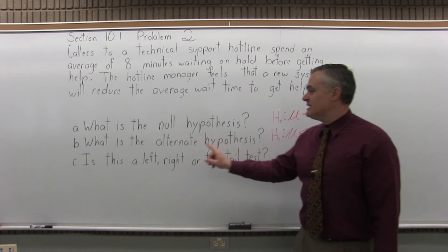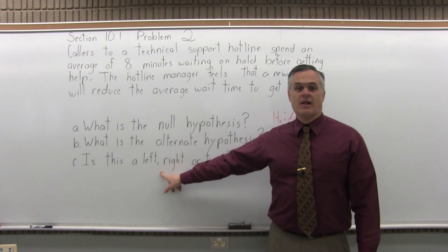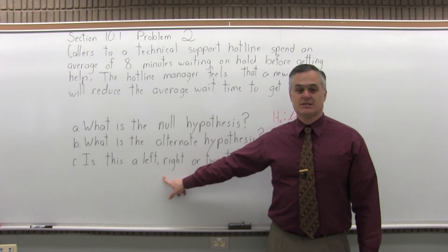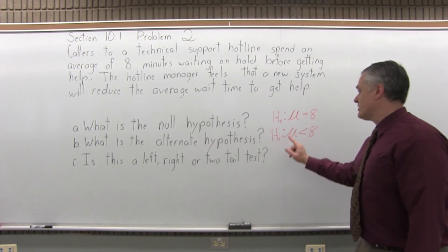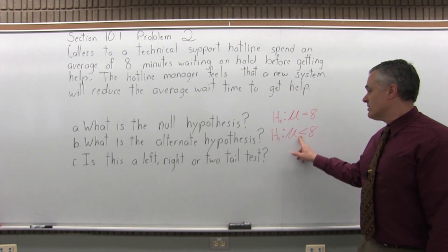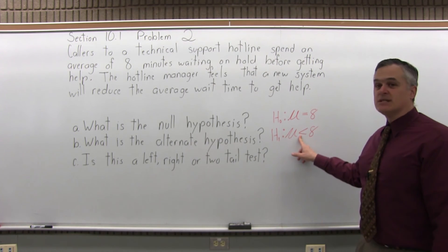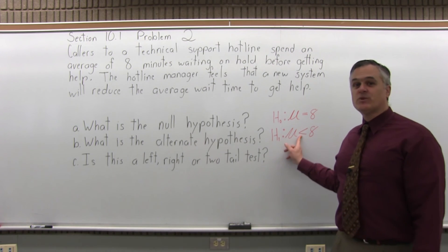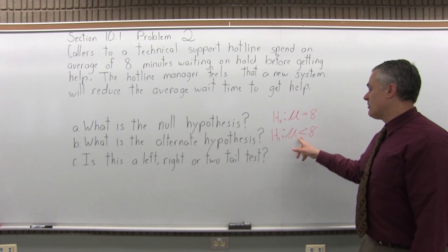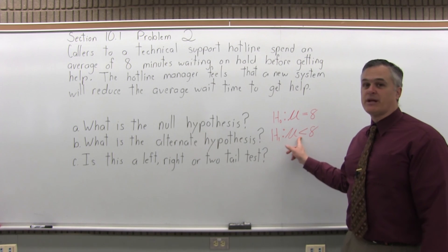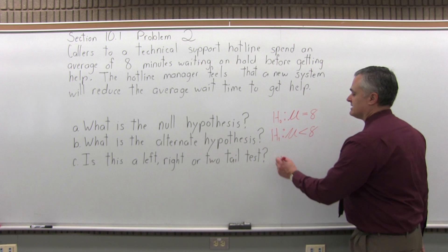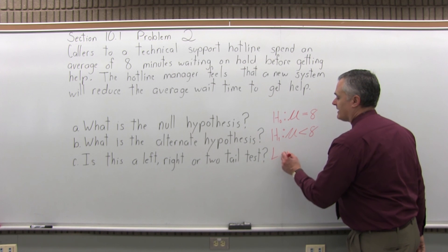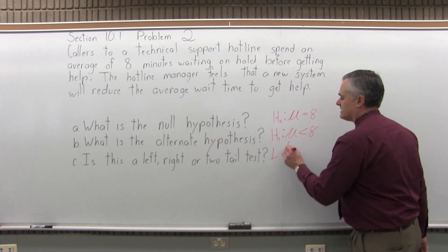Part C: is this a left, right, or two-tail hypothesis test? What you want to do is look at the alternate hypothesis. Notice the inequality symbol and see which direction it's pointing. For this problem, the less than symbol from the alternate hypothesis is pointing to the left. So this is a left-tail hypothesis test.